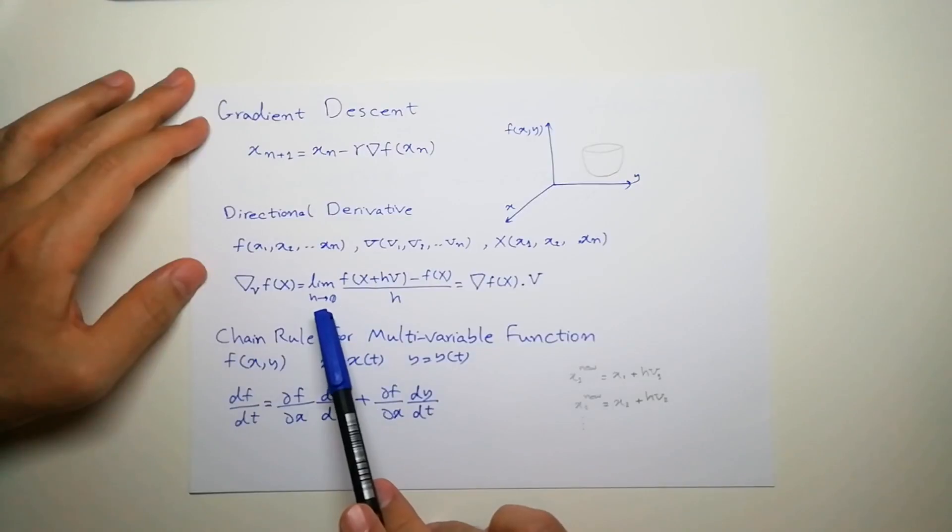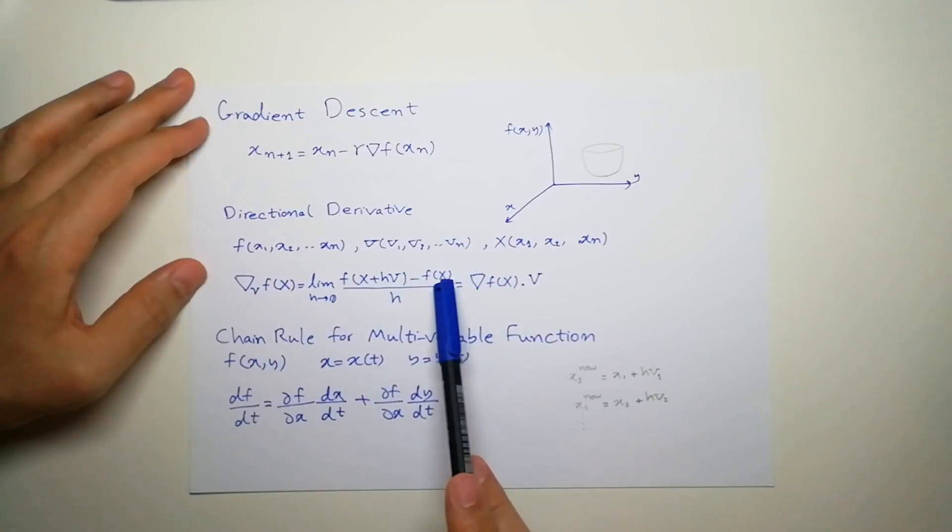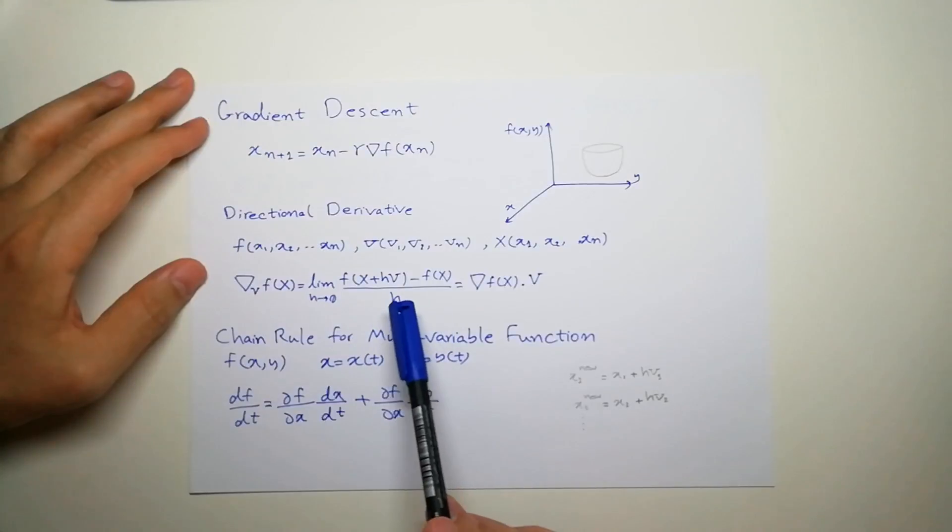Which, based on the definition of derivative, is the limit of our function at that point plus h multiplied by this vector, minus the value of the function at that point. So let's have a look.